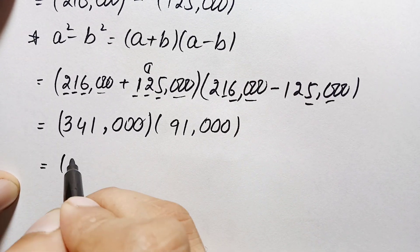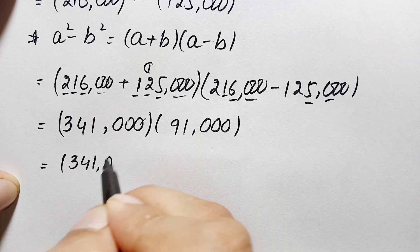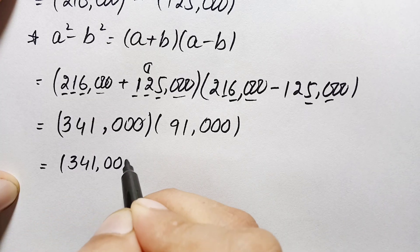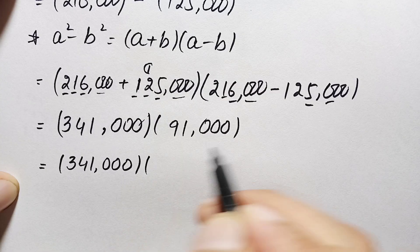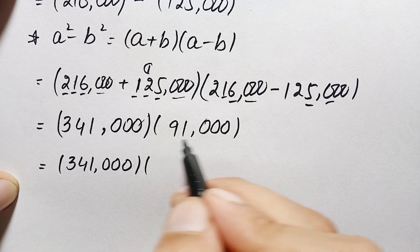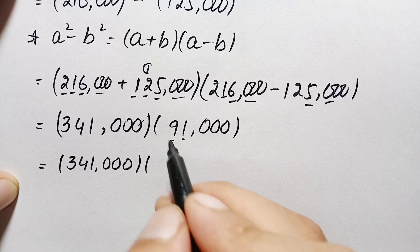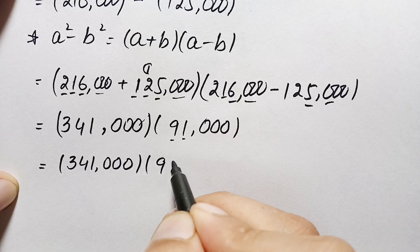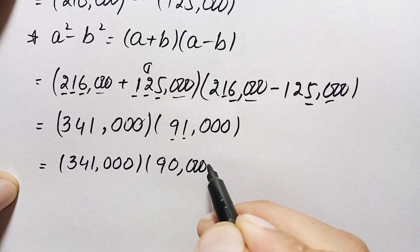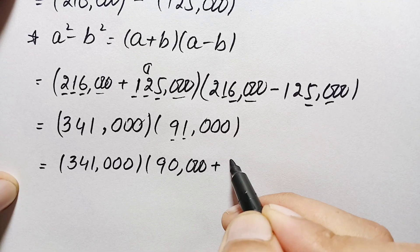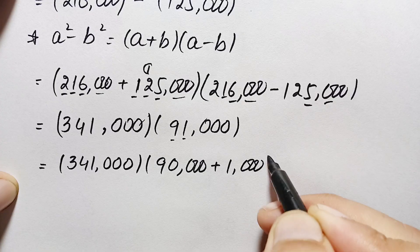Now this multiplication of 341,000 times 91,000 is very easy and interesting. We leave 341,000 as is, and we write 91,000 as the sum of the place values of its non-zero digits: the place value of 9 is 90,000, plus the place value of 1 is 1,000.